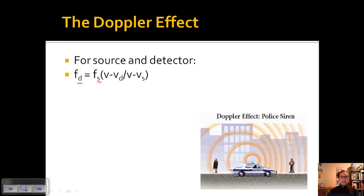The frequency that the detector hears is equal to the frequency of the source times the quantity speed of sound, which is velocity, minus the speed of the detector divided by the speed of sound minus the speed of the source. Obviously if one of them wasn't moving, then that speed would become zero.